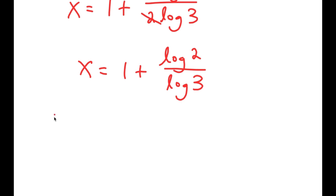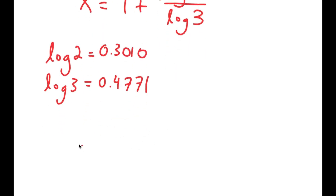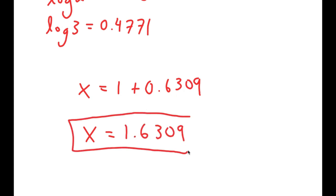Log 2 is approximately 0.3010 and log 3 is approximately 0.4771, so x equals 1 plus 0.3010 over 0.4771, which equals 1 plus 0.6309, giving x equals 1.6309. So this is my solution.